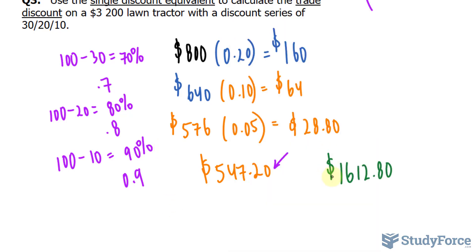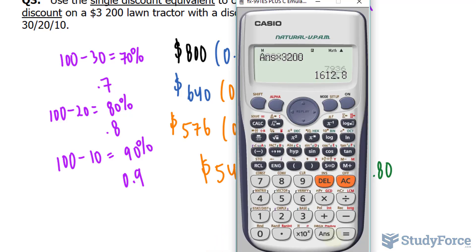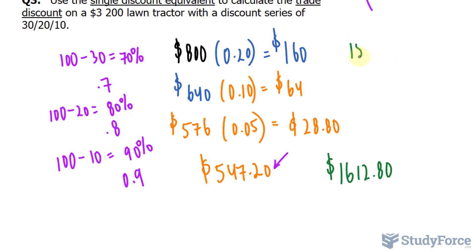Multiplying that now to the base value of 3,200 gives us a discount of $1,612.80. So let's write that down. That's the discount. Subtracting that from 3,200 gives us the final value that you pay of $1,587.20.